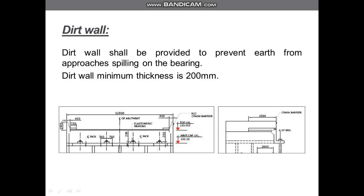As you can see in the diagram, the dirt wall is preventing the earth from the approaches from spilling onto the bearing. The minimum thickness of the dirt wall is 200 mm. These were the walls used in the design of bridges and highways.